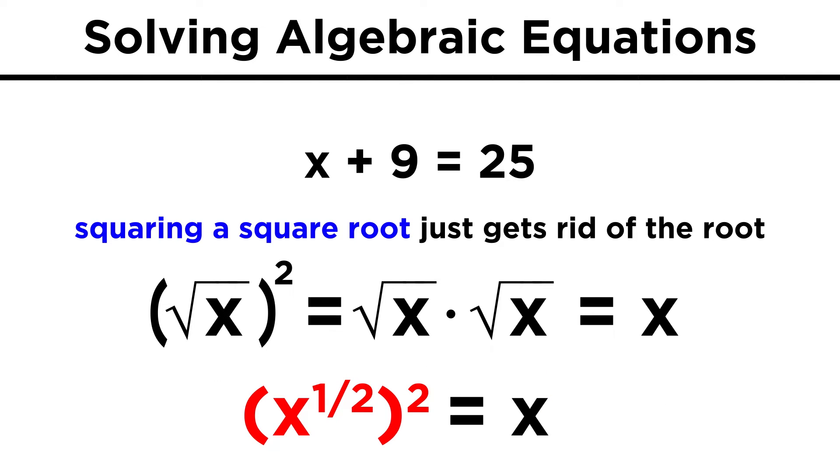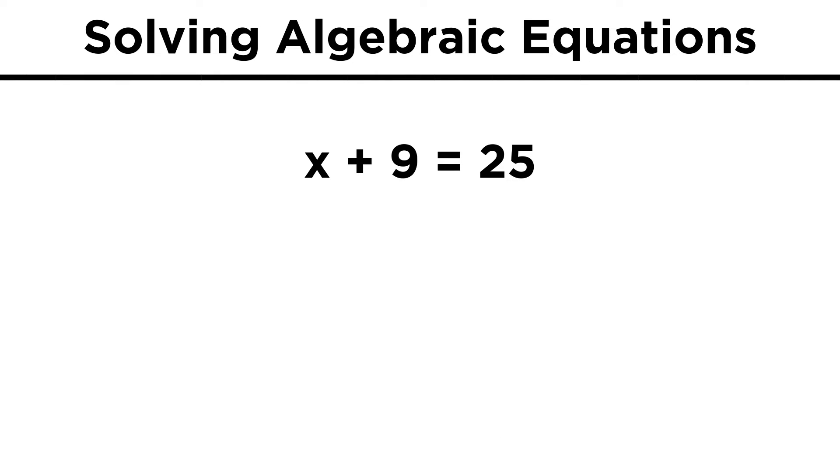On the left, we have this term to the one-half power to the second power. We can recall from our rules of manipulating exponents that x to the a to the b equals x to the a times b, and here a times b, or one-half times two, equals one. So the one-half and the two essentially negate one another to just leave the term by itself. Now things look much simpler: x plus nine equals twenty-five, so we subtract nine from both sides, and we get x equals sixteen.